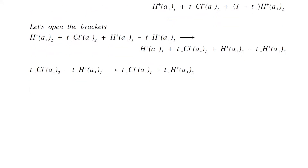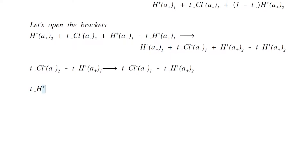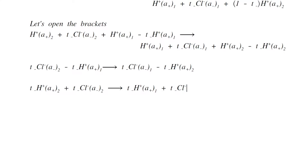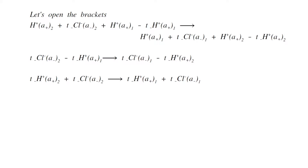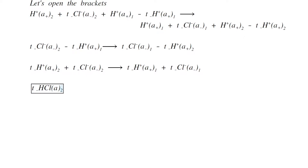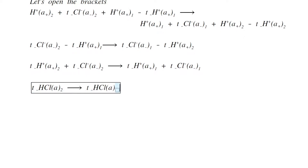Cancelling H+ ions of activity a1 and a2 from both sides, we get T- gram equivalents of Cl- of activity a2 minus T- gram equivalents of H+ of activity a1 gives T- gram equivalents of Cl- of activity a1 minus T- gram equivalents of H+ of activity a2. Rearranging to place all activity a2 terms on one side and a1 on the other: T- gram equivalents of H+ of activity a2 plus T- gram equivalents of Cl- of activity a2 gives T- gram equivalents of H+ of activity a1 plus T- gram equivalents of Cl- of activity a1. Combining H+ and Cl- to form HCl, the final equation is: T- gram equivalents of HCl of activity a2 is converted into T- gram equivalents of HCl of activity a1 (equation 4).